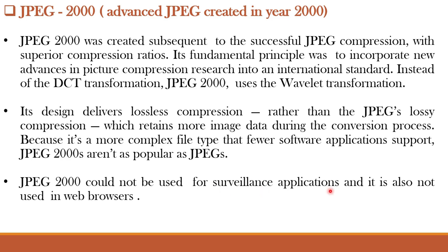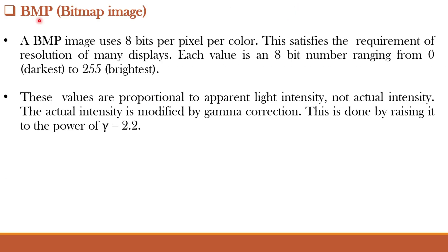JPEG-2000 cannot be used for surveillance applications and is also not used in web browsers. The next file format is the bitmap image. A bitmap image uses 8 bits per pixel per color, satisfying the resolution requirements of many displays such as CRT, LED, and liquid crystal displays. Each value is an 8-bit number ranging from 0 (darkest) to 255 (brightest). These values are proportional to apparent light intensity and not actual intensity. The actual intensity is modified by gamma correction, done by raising K to the power of gamma equal to 2.2.